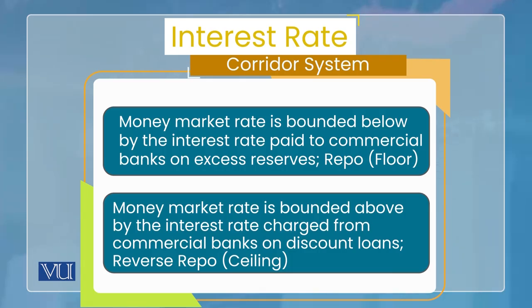Similarly، money market rate is bounded above by the discount rate or ceiling rate، which is also set by the central bank۔ Bounded above کا مطلب ہے کہ یہ اس boundary سے اوپر نہیں جا سکتا۔ Money market rate demand اور supply کی forces سے determine ہوتا ہے اور جب demand یا supply change ہو تو وہ change بھی ہو جاتا ہے، لیکن نہ floor سے نیچے جا سکتا ہے نہ ceiling سے اوپر۔ اس کا نتیجہ یہ ہوتا ہے کہ fluctuations بہت زیادہ نہیں ہوتیں، باوجود اس کے کہ market میں بڑی fluctuations foresee کی جا رہی ہوں۔